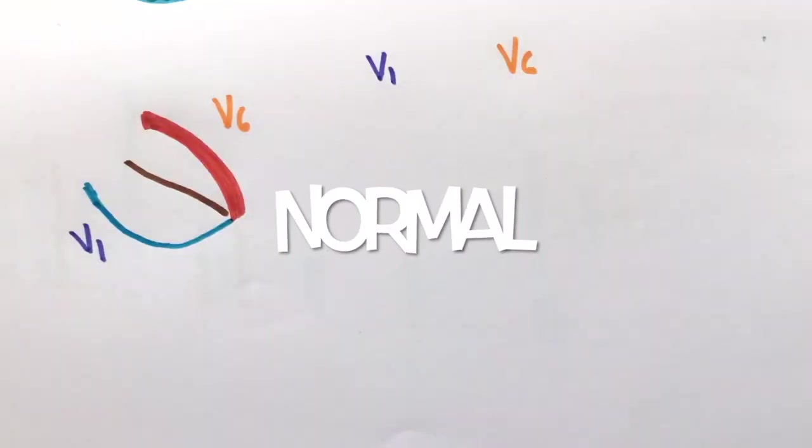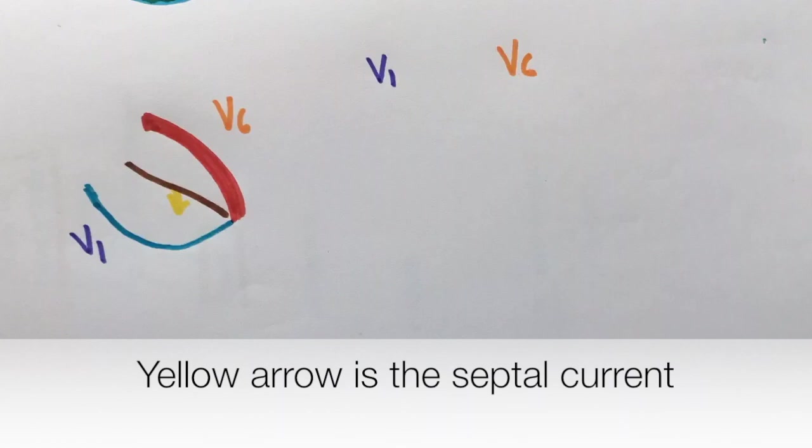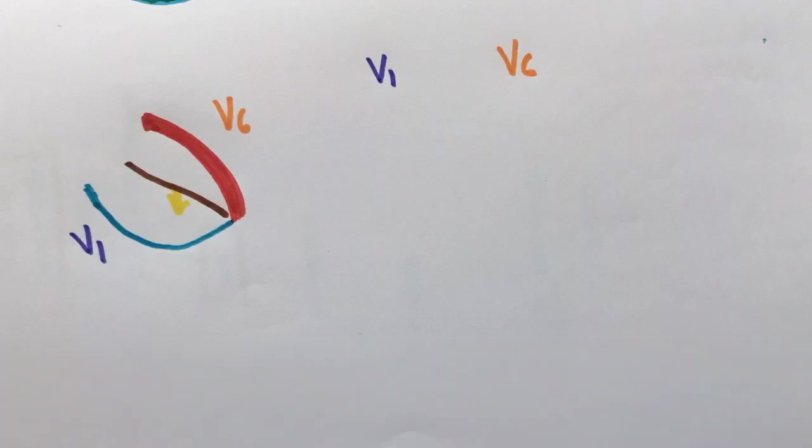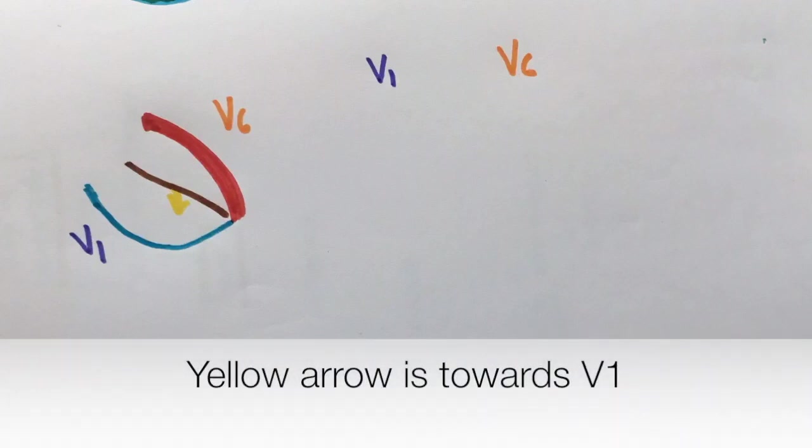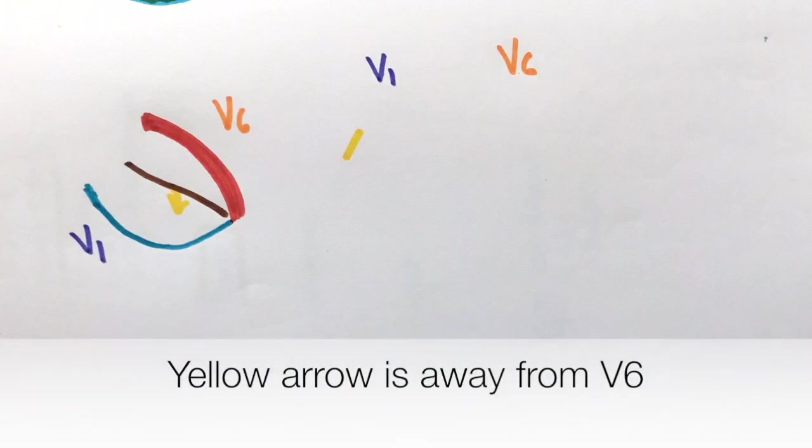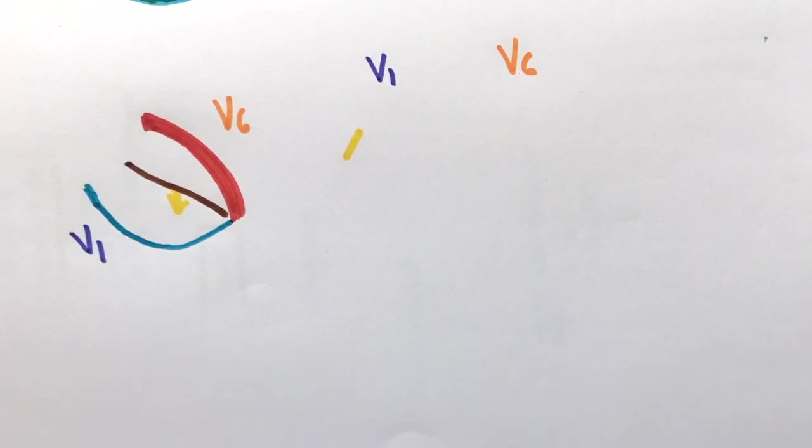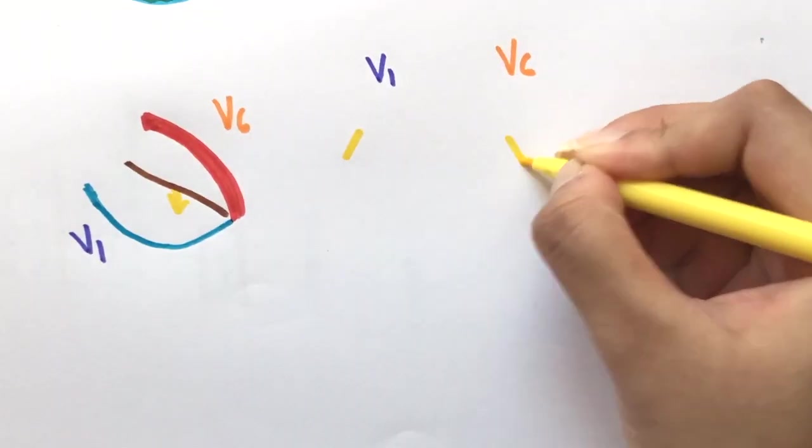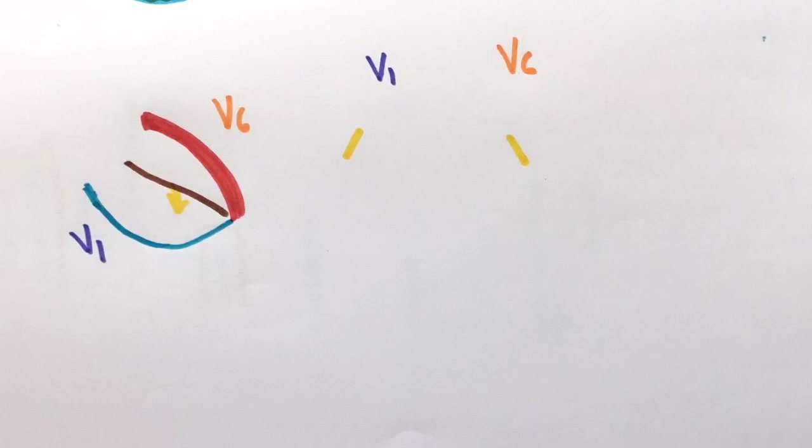Usually, the electrical impulse comes into the ventricles via the AV node. The septal current depolarizes the right side first. Since the impulse is towards the right ventricle and towards V1, there will be a positive deflection seen on V1. Since it is away from the left side and away from V6, there will be a negative deflection seen on V6.